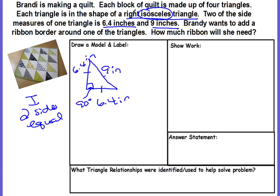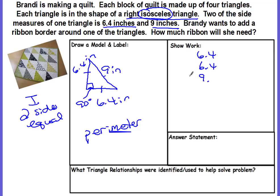Use all of the clues: right triangle, isosceles triangle, and the angle-side relationship. Brandy wants to add a ribbon border around one triangle — that means we need the perimeter. We add 6.4 plus 6.4 plus 9. Remember, 9 has an invisible decimal, and when adding decimals you line up the decimal points. That gives us 21.8 inches of ribbon.